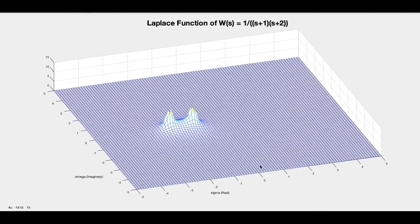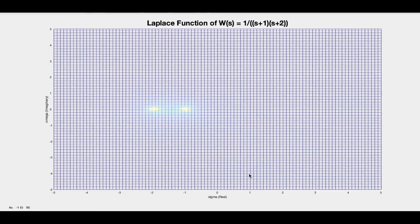If I move this around and look straight down on top, you can see clearly minus one, there's a pole with zero imaginary and at minus two, there's a pole with zero imaginary.